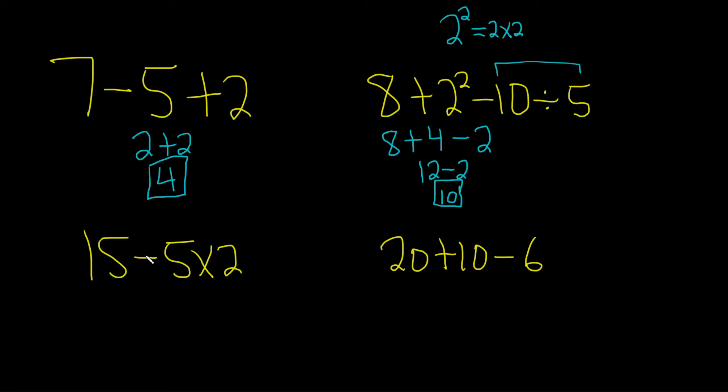This example on the bottom left - again, the rule is multiplication and division first, left to right. Here we have times, so we do that first. We write down the 15, write down the minus sign, and then do the multiplication: 5 times 2 is 10. Now we perform the subtraction: 15 minus 10 equals 5.